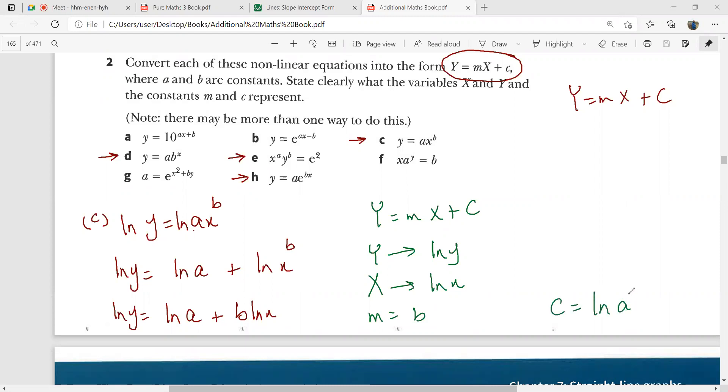So if you take the logarithms, the natural log of all the values of y and x, and then you plot them, you will end up with a line graph. Now look at this. Can you try part d, e, and maybe part f?